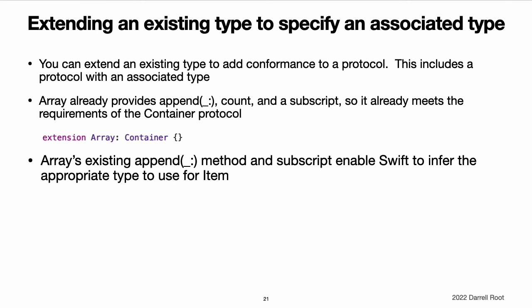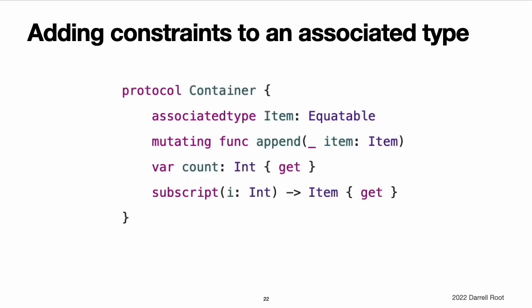Extending an existing type to specify an associated type. You can extend an existing type to add conformance to a protocol, including a protocol with an associated type. Swift's array type already provides an append method, a count property, and a subscript with an integer index to retrieve its elements. These three capabilities match the requirements of the container protocol. This means that you can extend array to conform to the container protocol simply by declaring that array adopts the protocol, using an empty extension. Array's existing append method and subscript enable Swift to infer the appropriate type to use for item, just as for the generic stack type previously. After defining this extension, you can use any array as a container.